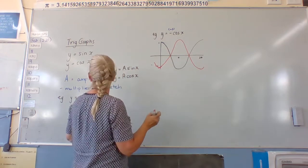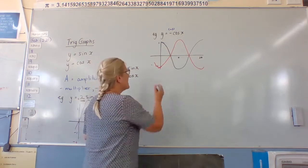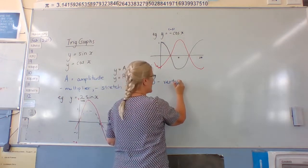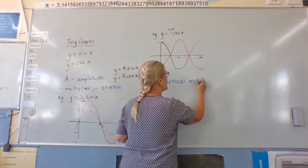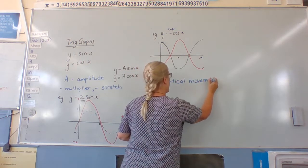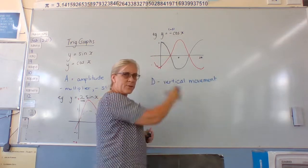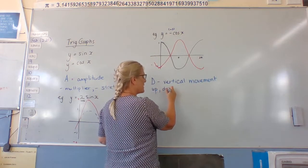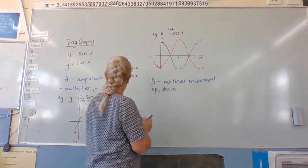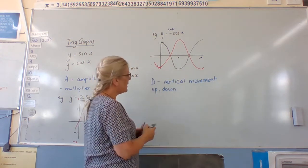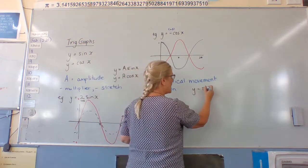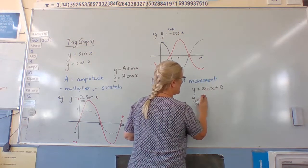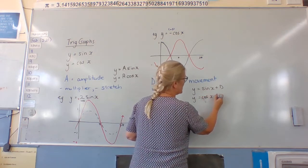The other one we're going to deal with today is d. D is our vertical movement — I know it doesn't start with a d, but that's what it is: vertical movement. That means we're moving up and down — up for positives and down for negatives. Where is it found on our equations? We've got y equals a sine x plus d or y equals a cosine x plus d.